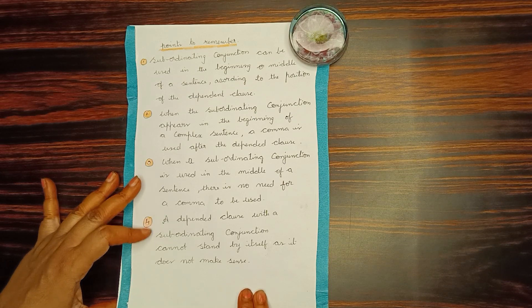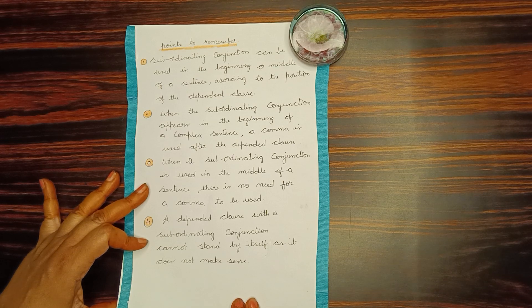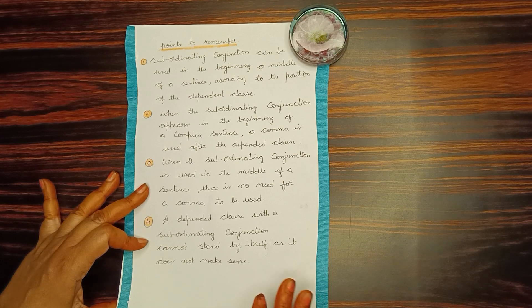Third point to remember: when a subordinating conjunction is used in the middle of a sentence, there is no need for a comma to be used.